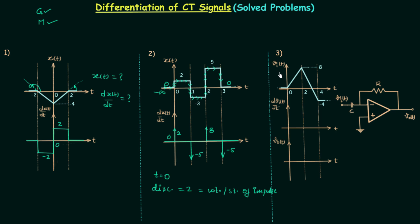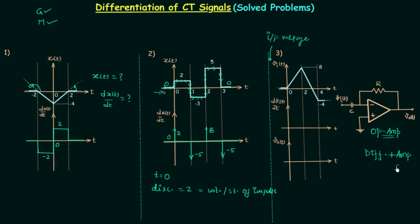Now we will solve the third problem. In the third problem, the waveform of signal v_i(t) is given — v_i is the input voltage — and this input voltage is applied to the negative terminal of the op-amp. By looking at the position of the capacitor and the resistor, you can see that this configuration is working as a differentiator. So signal v_i(t) will be differentiated, but since v_i(t) is applied to the negative terminal, the input will be reversed. It will differentiate as well as perform amplitude reversal, so we need to perform two operations.